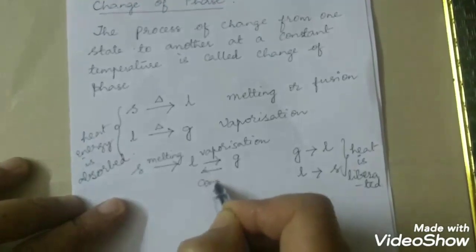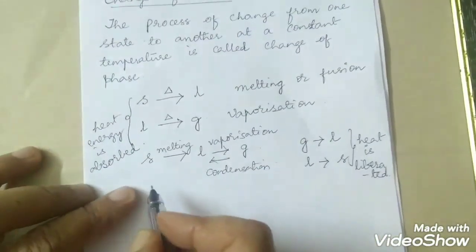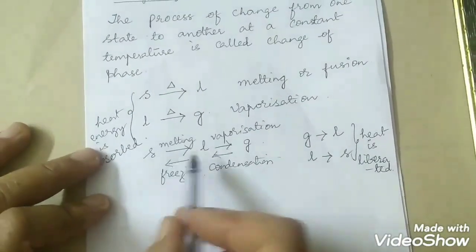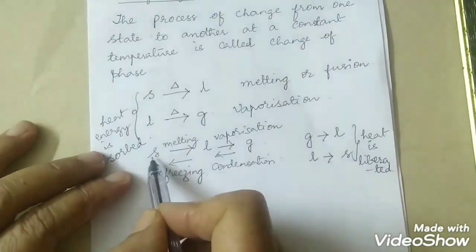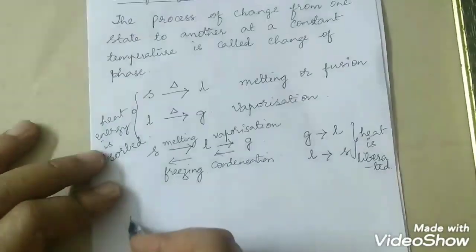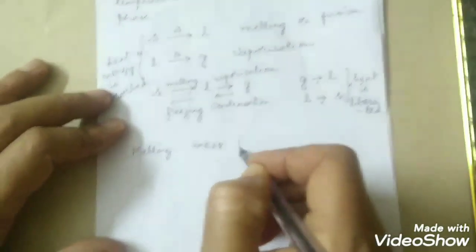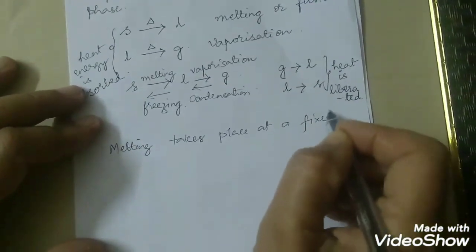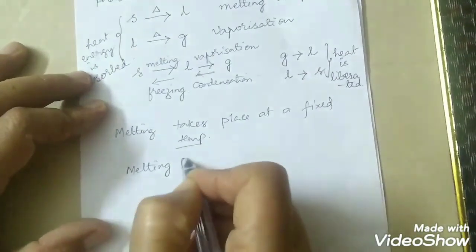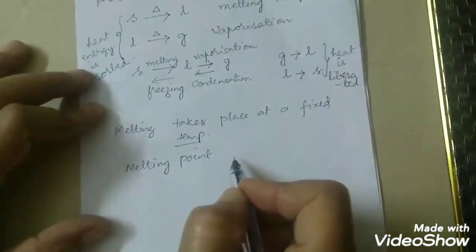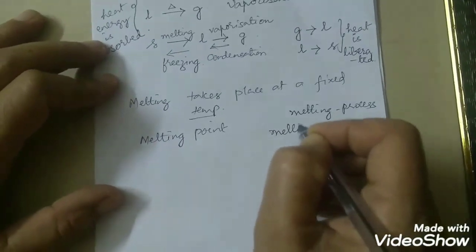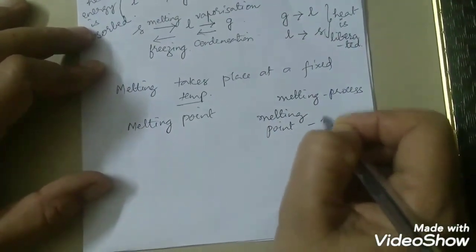A gas on condensation changes to liquid, and a liquid on freezing changes to solid. You have to remember one thing: the process wherein a solid converts to liquid is called melting, and melting takes place at a fixed temperature. This fixed temperature is called melting point. Please note the difference — melting is a process whereas melting point is a temperature.